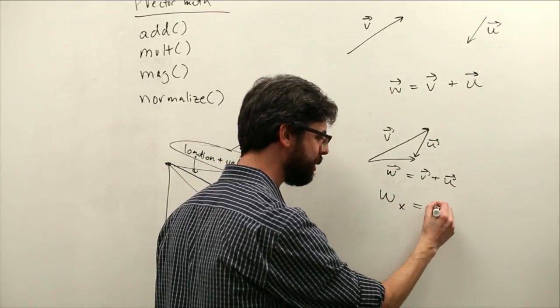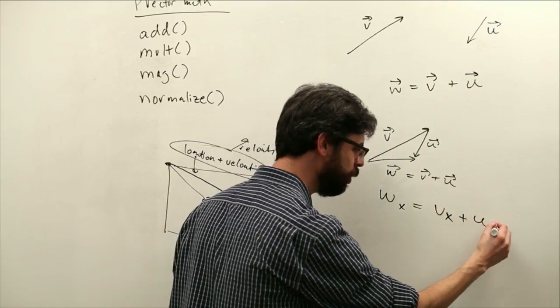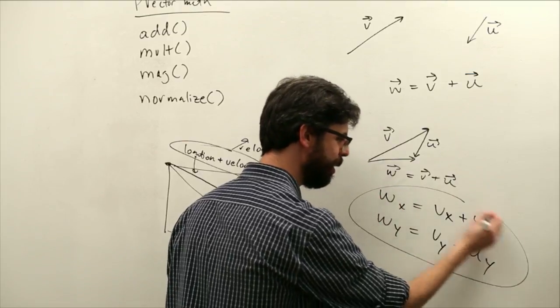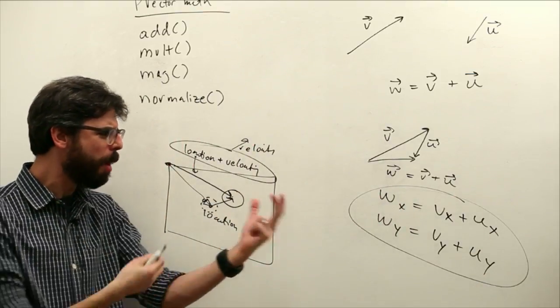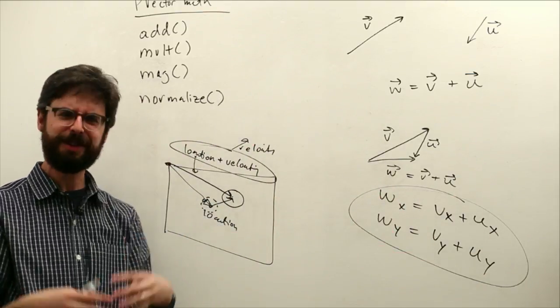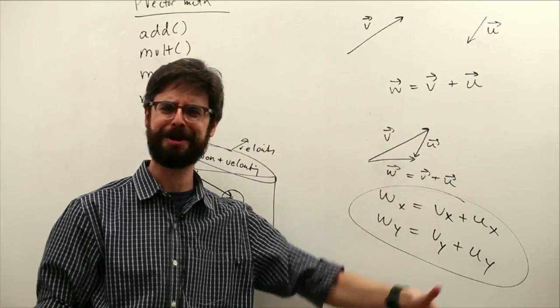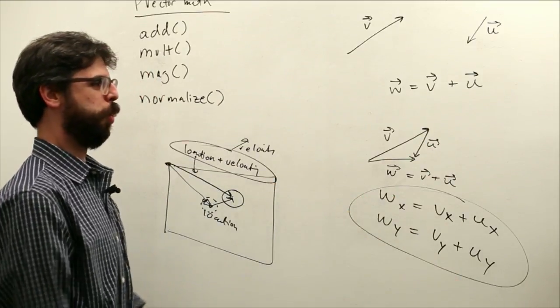This maps exactly to what we're doing with location and velocity. Here's our location where we're drawing our bouncing ball. The location vector tells us how to get from the origin to that location, pointing from 0,0 to that location. If we add velocity to location and put those vectors end to end, this vector here is location plus velocity. So to add v plus u means add the components together: w sub x equals v sub x plus u sub x, w sub y equals v sub y plus u sub y. This is okay, you guys are okay with this.